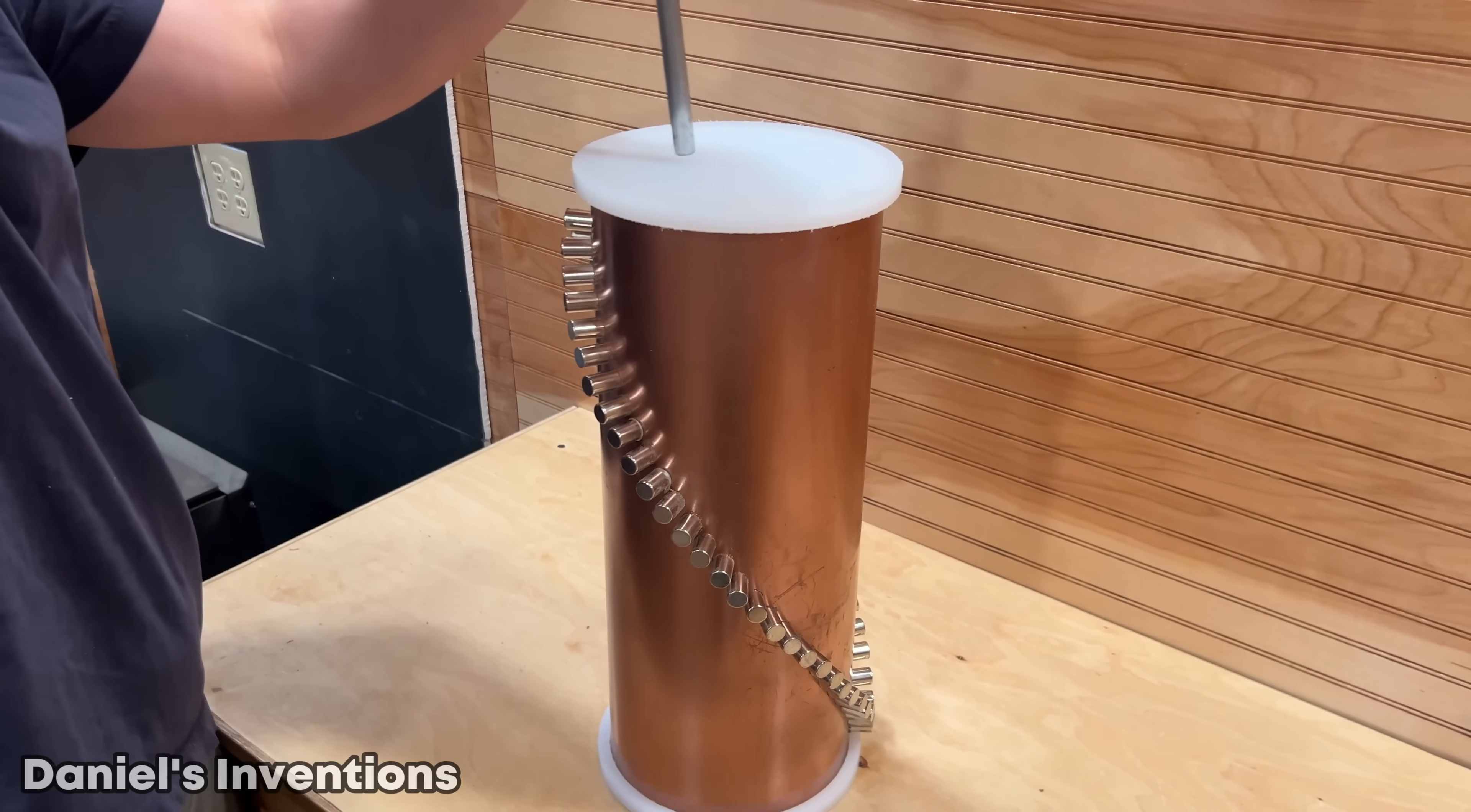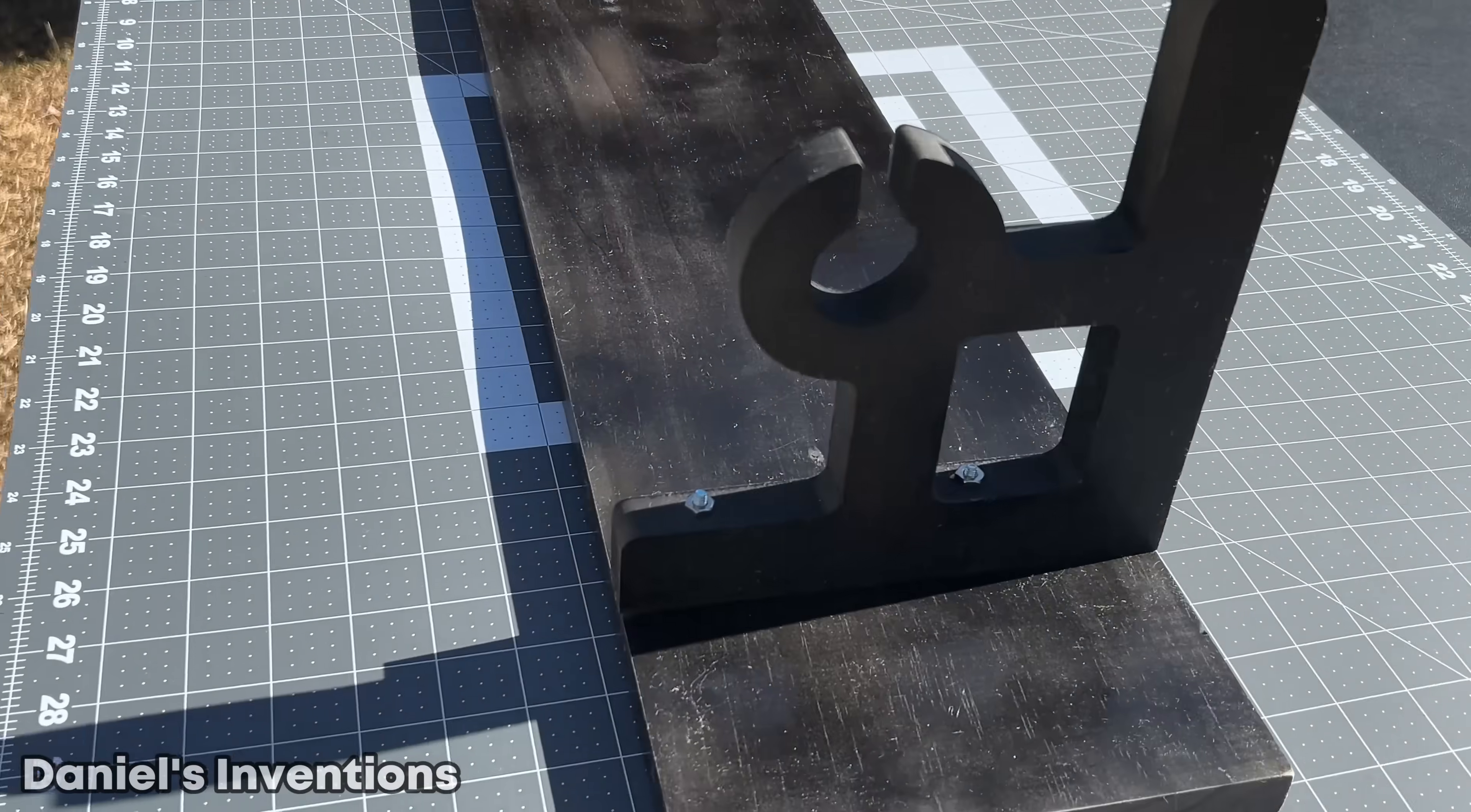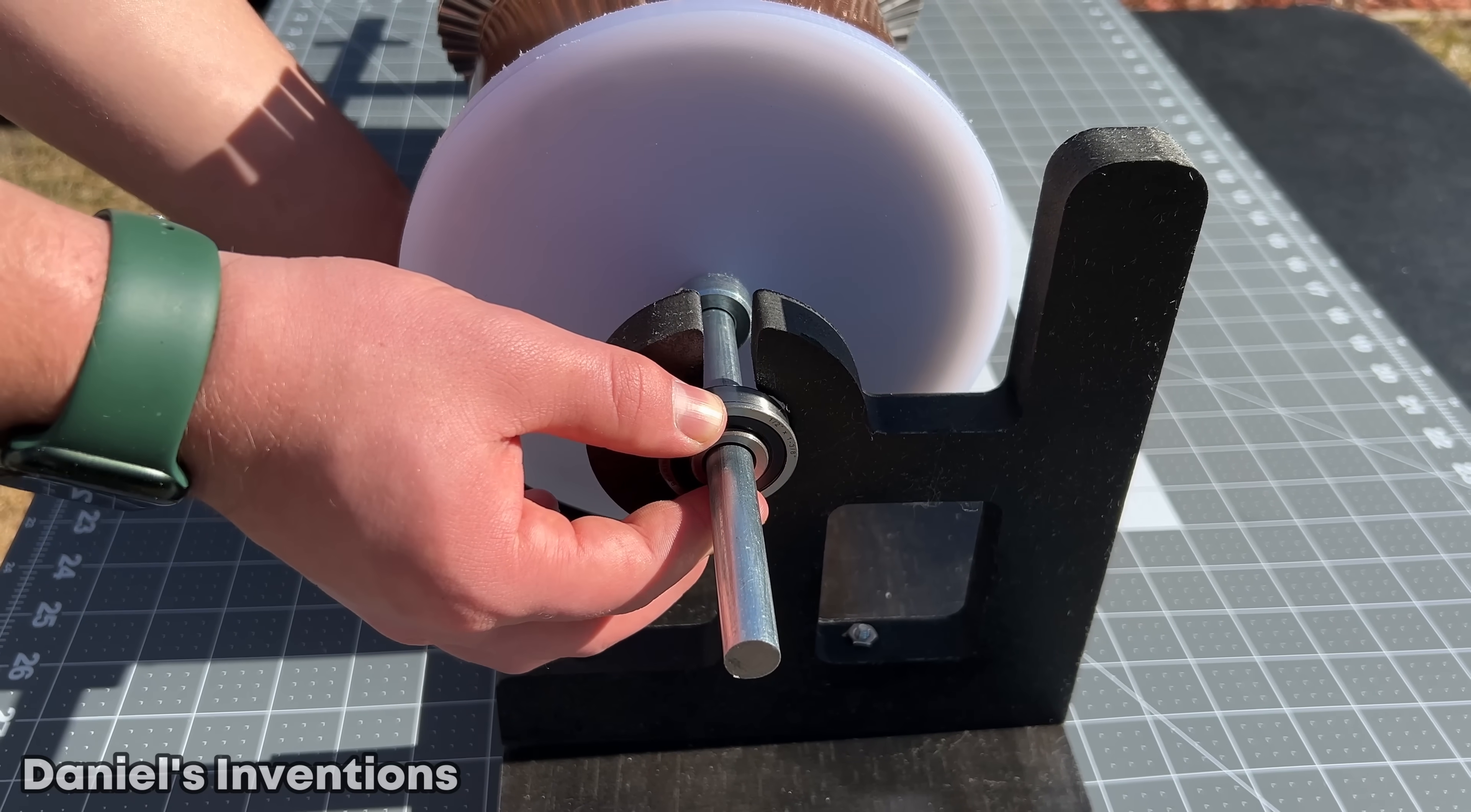I made some caps for the rotor out of high density polyethylene. Also, I am using a half an inch shaft, collars, and bearings. I made a support that will hold the rotor in place. Now it's time to assemble all the pieces of the motor together.